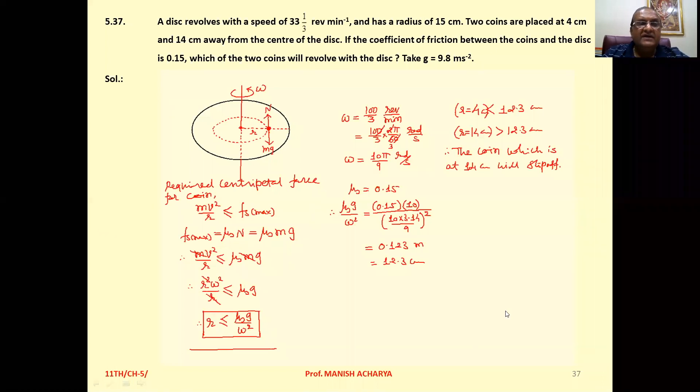A disk revolves with a speed of 33 1/3 revolutions per minute and has a radius of 15 cm. Two coins are placed at 4 cm and 14 cm away from the center of the disk. If the coefficient of friction between the coins and the disk is 0.15, which of the two coins will revolve with the disk, or one can ask which coin will slip off?